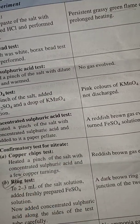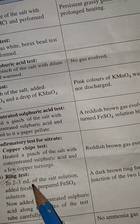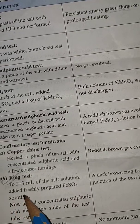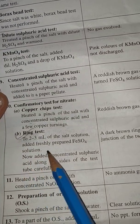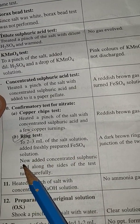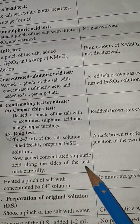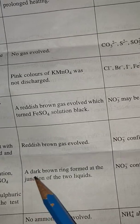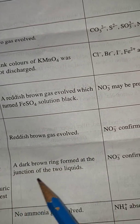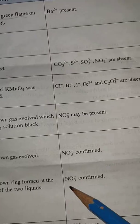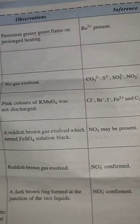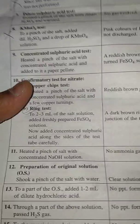The most important is ring test: take two or three ml of salt solution and add freshly prepared FeSO4 solution. Now add concentrated sulfuric acid along the side of the test tube carefully. A dark brown ring formed at the junction of the two liquids. NO3⁻ is confirmed.